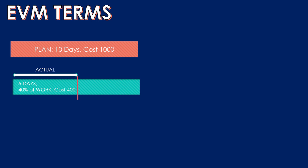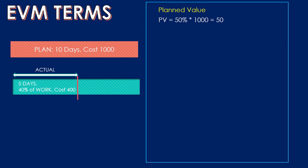Let's look at the terms involved in earned value management. The first is Planned Value (PV): as of five days into the project, the planned value is the sum of the budget authorized according to the plan. After five days we should be 50% complete, so 50% of the total planned cost of 1000 gives a planned value of 500. Earned Value (EV) is the value of work already performed, expressed in terms of planned cost. We completed 40% of the work, so 40% of 1000 is 400 — that is the earned value.